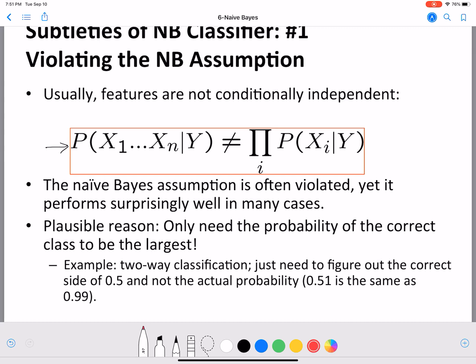Why it works despite having such a simplifying assumption is because we only need the probability of the correct class to be the largest. We don't care how large it is, it only has to come out on top. For example, in two-way classification, anything more than 0.5, as low as 0.51, would be enough for our classifier to pick that as the class that comes out on top.